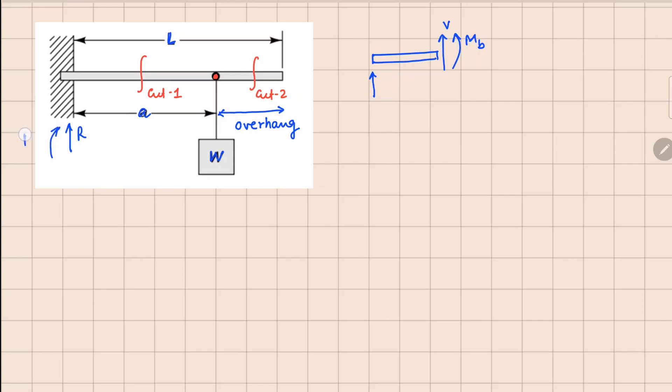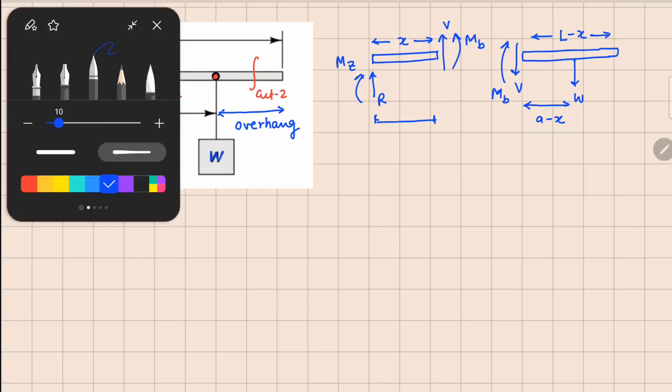This is R and this is MZ. Now for the same cut if I look at the right part, here we have this force W right here, your shear force and bending moment acting in this manner. In terms of distances, your cut is always made at a distance of x, so this is x right here. This total distance is L minus x. Since this weight is at a distance A from this side and this distance is x already, so this is A minus x right here.